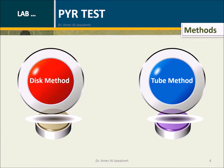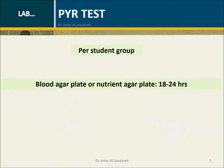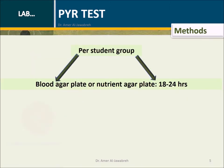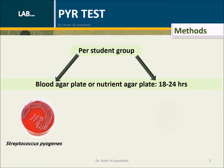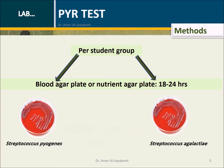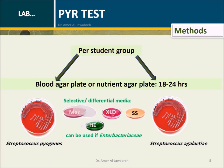Methods: disc method and tube method. Provide each student group with two culture plates: Streptococcus pyogenes and Streptococcus agalactiae.